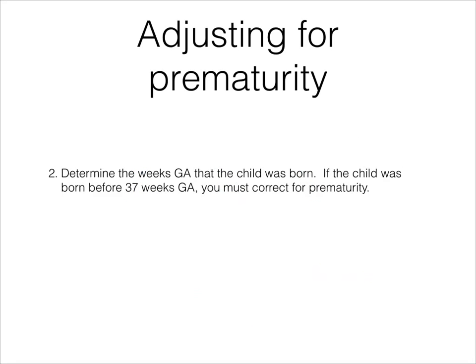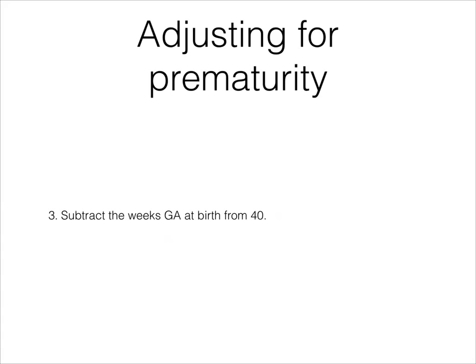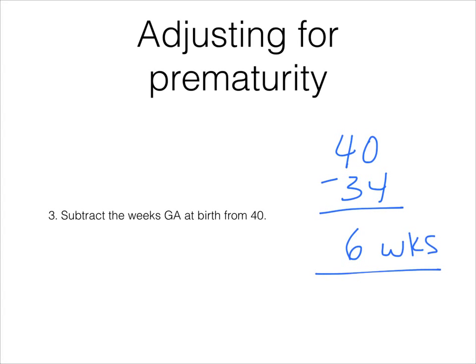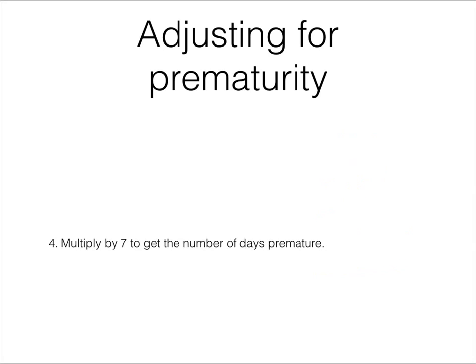We determine the weeks gestational age that the child was born. If the child was born before 37 weeks gestational age, you must correct for prematurity. We know from our example that Ryan was born at 34 weeks. We subtract the weeks gestational age at birth from 40: 40 minus 34 is 6, so Ryan was 6 weeks premature. We then multiply by 7 to get the number of days premature: 6 weeks times 7 is 42 days. So Ryan was 42 days premature.